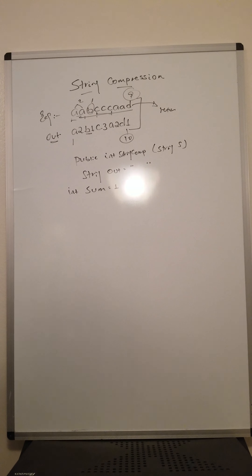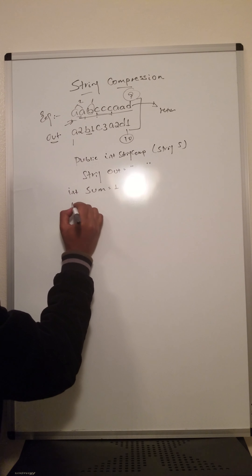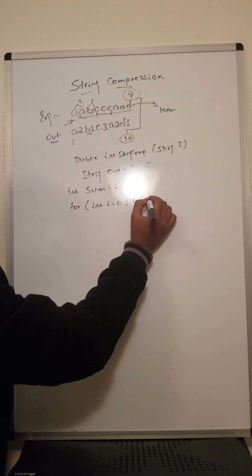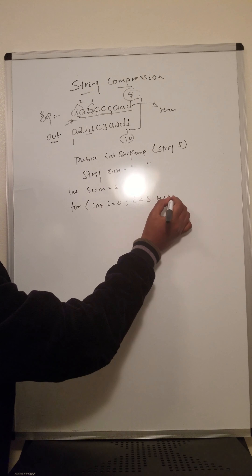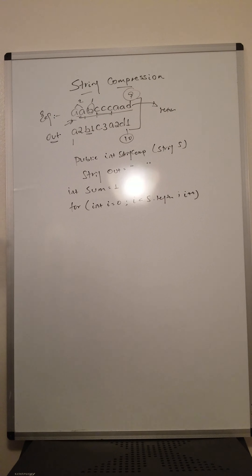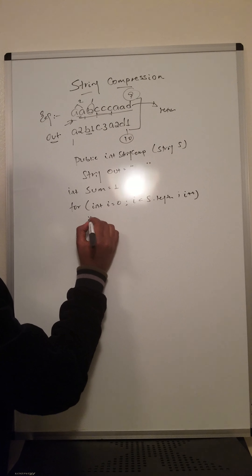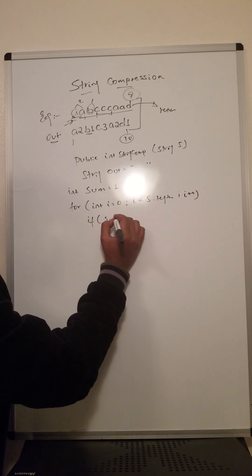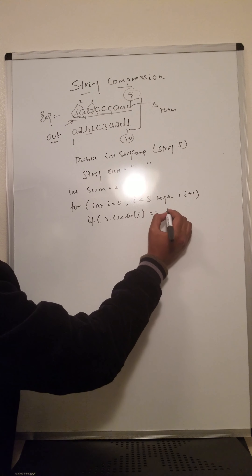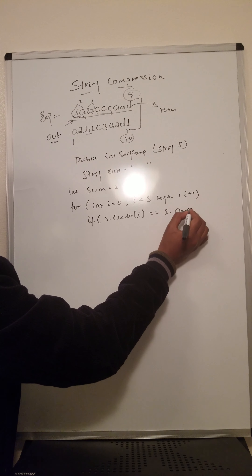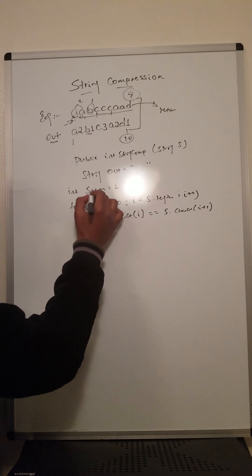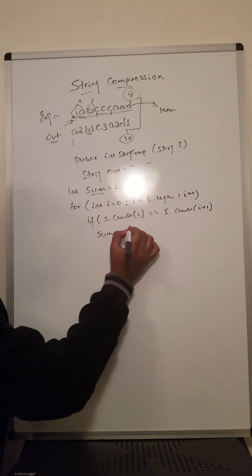Then we use a for loop iterating through the string. Inside the loop, if the character at index i is equal to the character at index i plus one — if the characters are the same — we increment our sum: sum equals sum plus one.